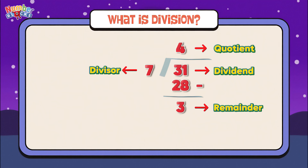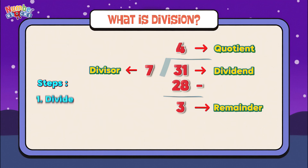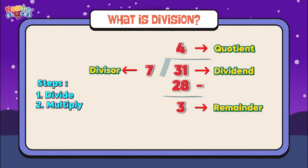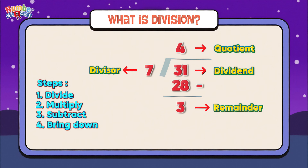Let's try to divide thirty-one by seven. But let's first check out the steps. First, we divide. And then we multiply. And then we subtract. And then we bring down and repeat the process.